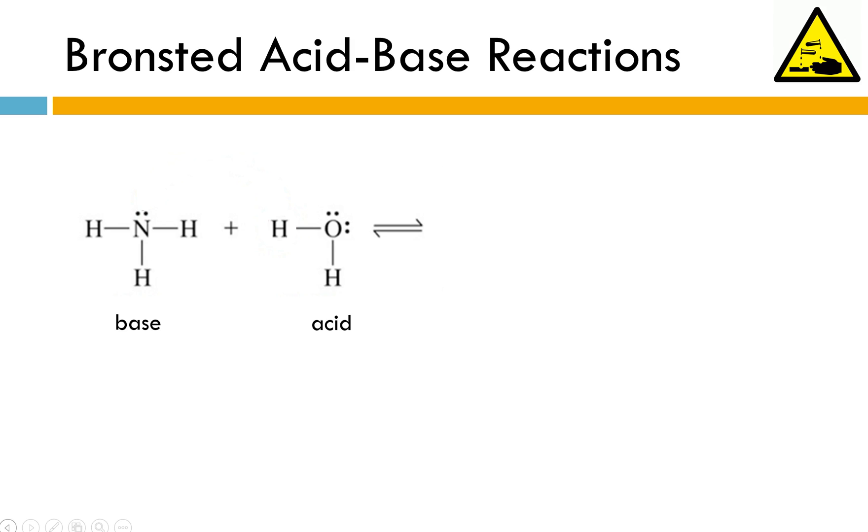We know according to the Bronsted-Lowry definitions of acids and bases, acids are proton donors and bases are proton acceptors. So water is behaving as an acid because it's going to take this hydrogen or this proton and transfer it to ammonia. You can think about that unshared pair of electrons on ammonia being negative. The hydrogen ion is positive so we're going to see attraction between those two. As a result we're going to form the ammonium ion NH4+ and hydroxide.